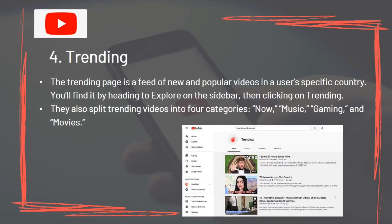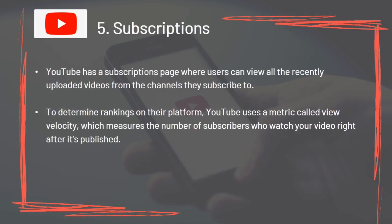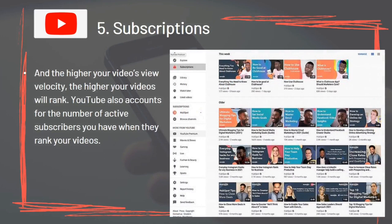The Trending page is a feed of new and popular videos specific to a user's country. You'll find it by heading to Explore on the sidebar and clicking Trending — split into categories: Now, Music, Gaming, and Movies. For Subscriptions, YouTube uses a metric called View Velocity, which measures the number of subscribers who watch your video right after it's published. The higher your video's View Velocity, the higher it will rank. YouTube also accounts for the number of active subscribers you have when ranking your videos.